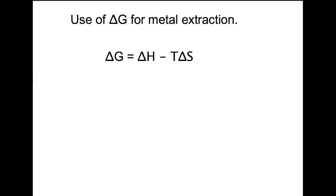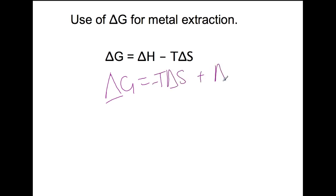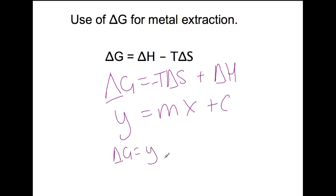Here is the delta G calculation that you are used to using. We can rearrange this delta G calculation to be in this form. When we do this, it should be clear that this could be the equation of a straight line. When we use the equation in this form, delta G is our Y value, temperature is our X value, minus delta S is our gradient M, and delta H is the Y intercept C.